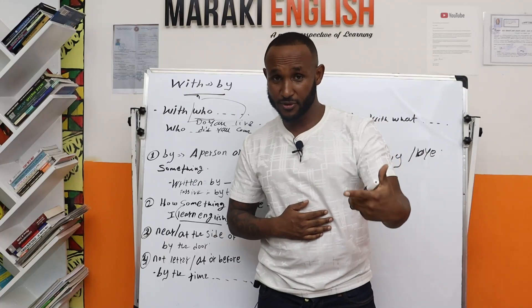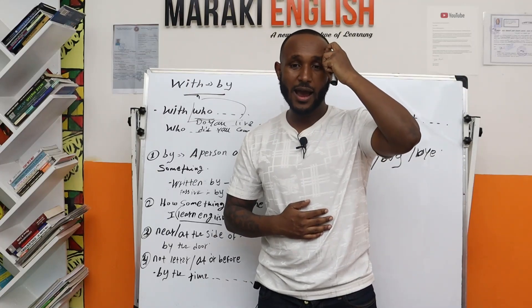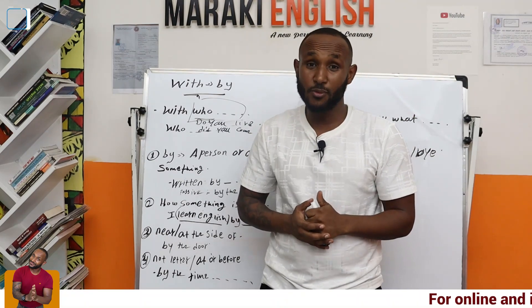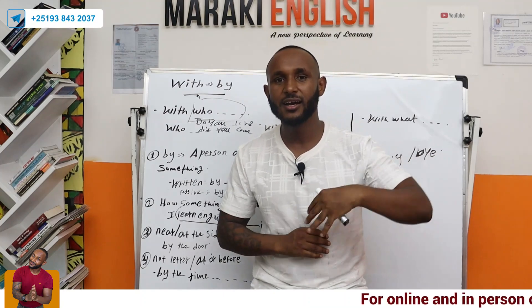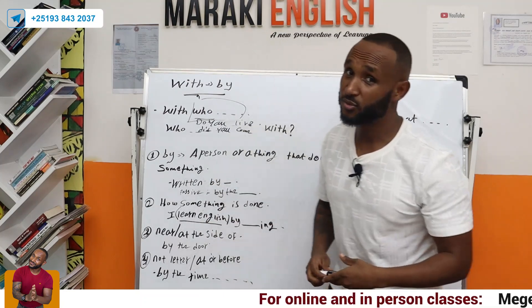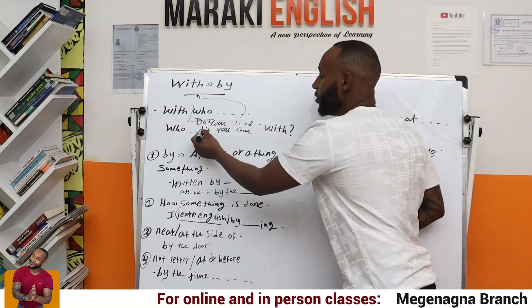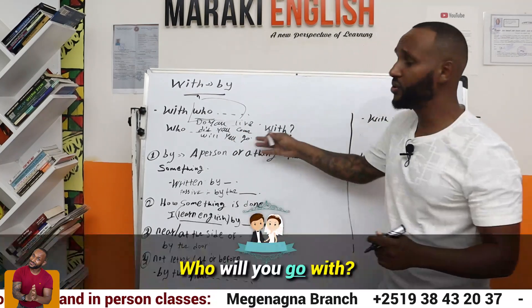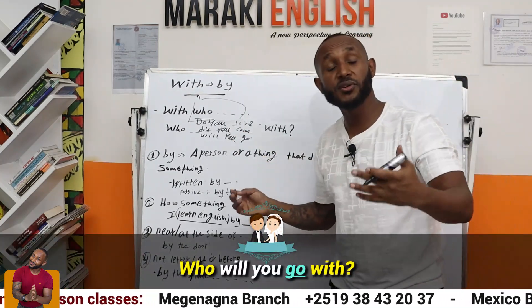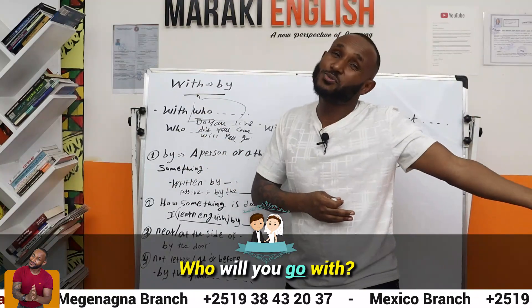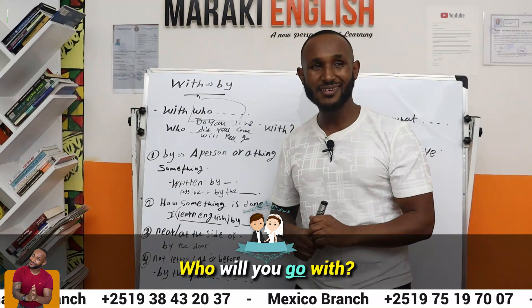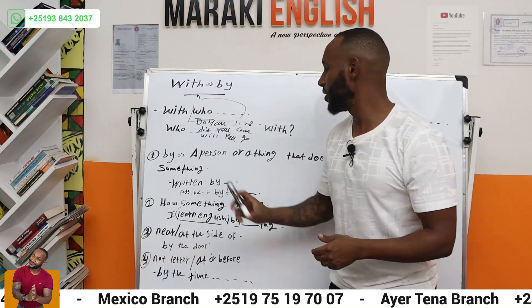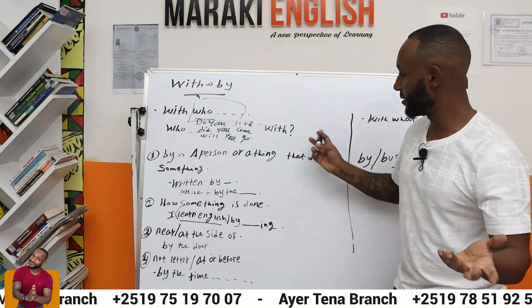We're going to change it to future this time. Tomorrow I have a wedding and I will go with someone. Ask me the person I'm going with — it's tomorrow. So: 'Who will you go with?' That's what you're saying. No native speaker would say 'Who is the person that will go with you?' Just say: 'Who will you go with?' — who is the person you will go with. That's it.